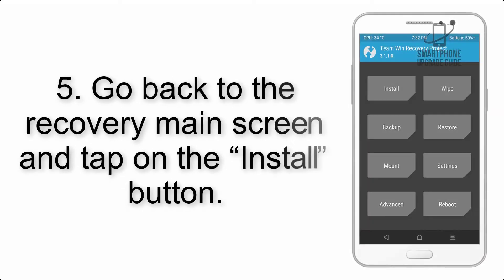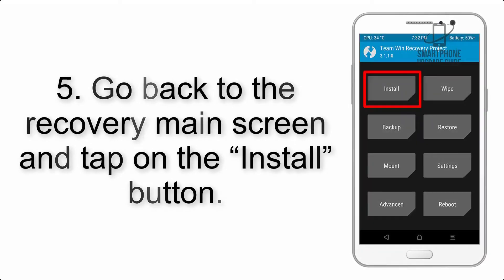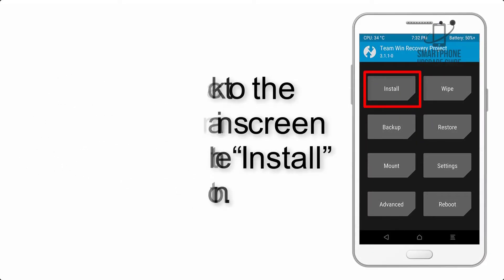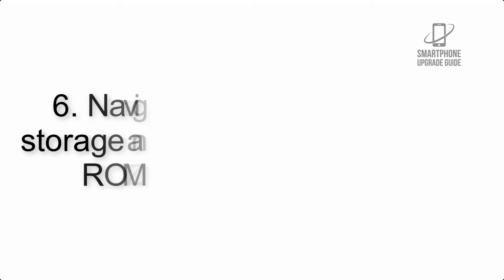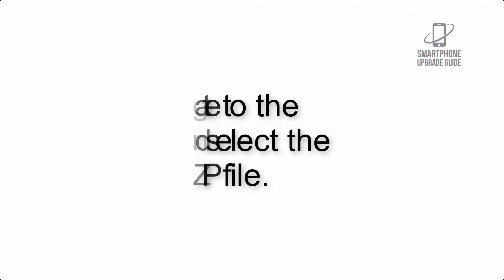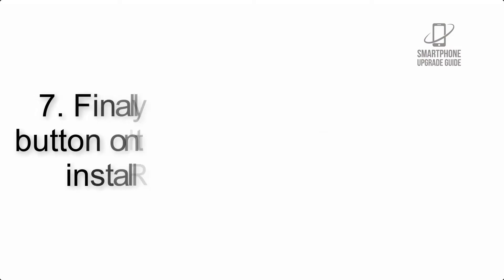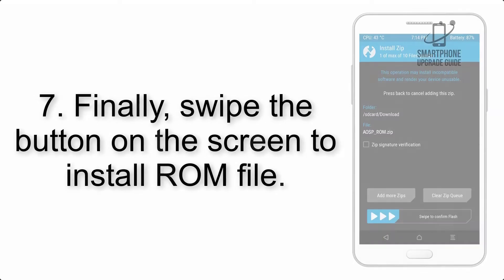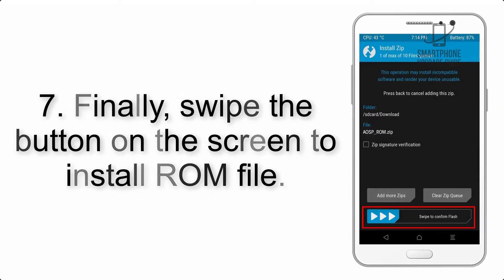Step 4: Swipe the button to wipe the device. Step 5: Go back to the recovery main screen and tap on the Install button. Step 6: Navigate to the storage and select the ROM zip file. Step 7: Swipe the button on the screen to install the ROM file.